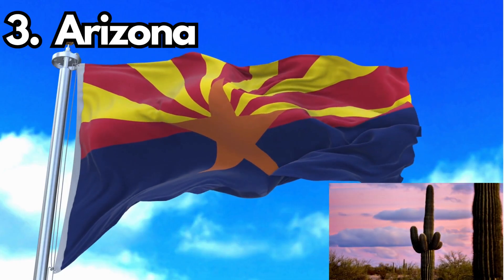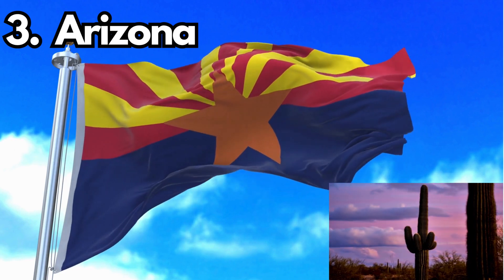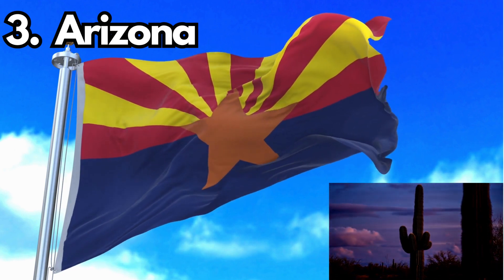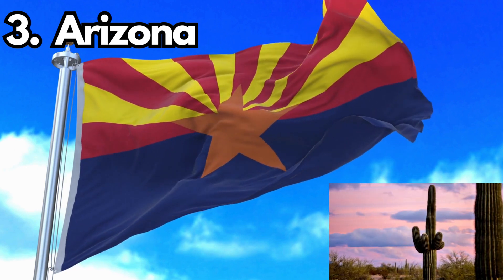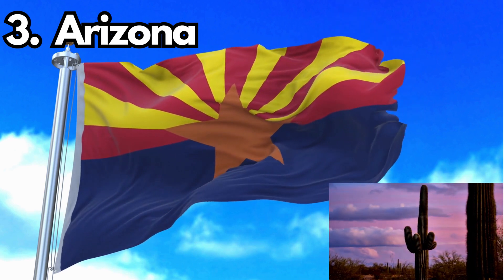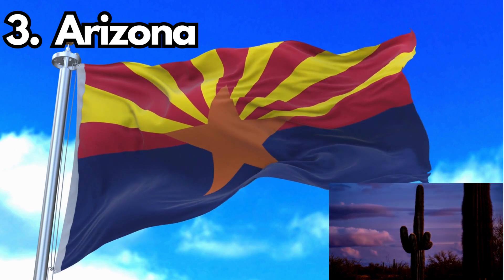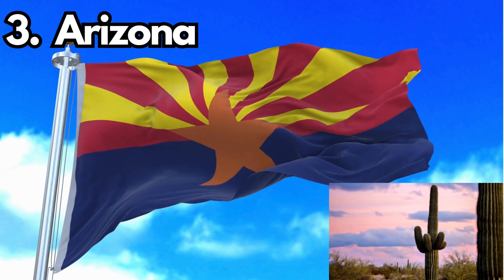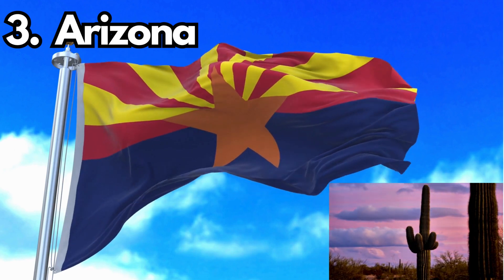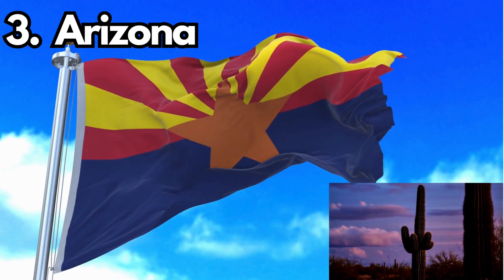3. Arizona. Design: The Arizona state flag consists of 13 rays of red and gold on the top half, representing the original 13 colonies, and a copper-colored star in the center. Meaning: The copper star represents Arizona's status as the largest producer of copper in the United States. History: The current design was officially adopted in 1917.